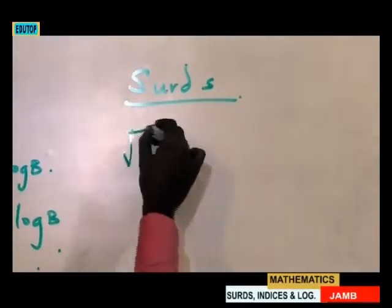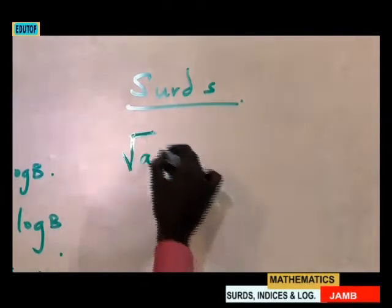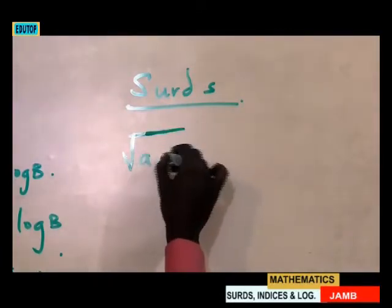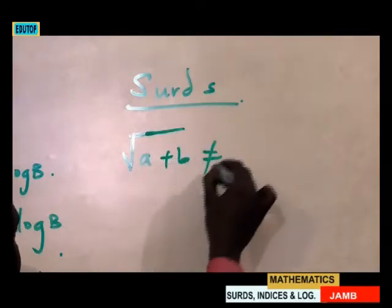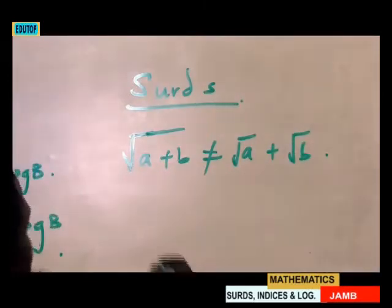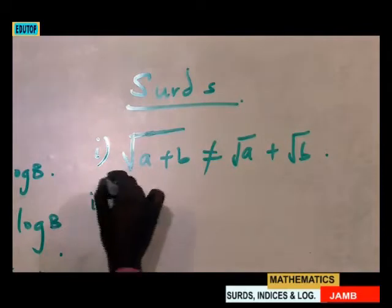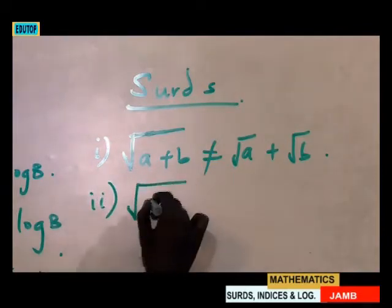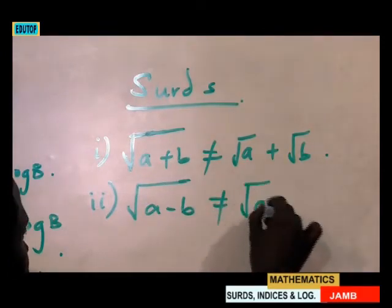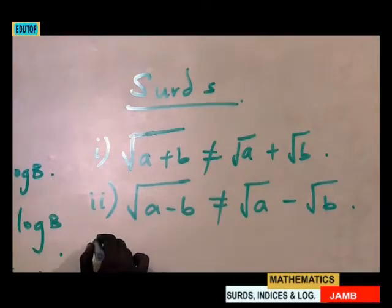Firstly, it should be noted that if you have two parameters or two constants, the square root of (a + b) is never equal to square root of a plus square root of b. Similarly, square root of (a − b) is never equal to square root of a minus square root of b.